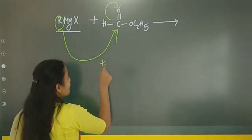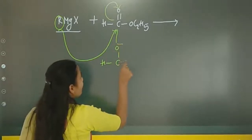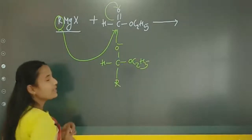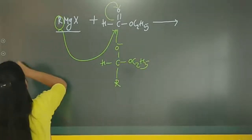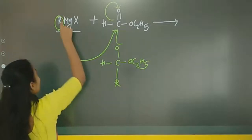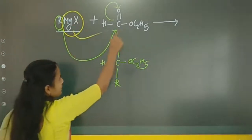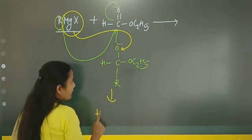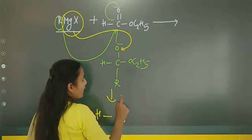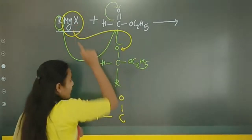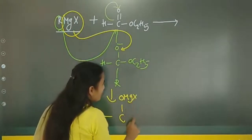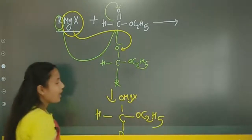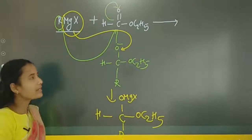The intermediate gives HC(O⁻)-OC2H5 with the alkyl group R attached, and MgX comes and attacks this position. It becomes HC(-OMgX)(-R)-OC2H5 as the addition intermediate product.